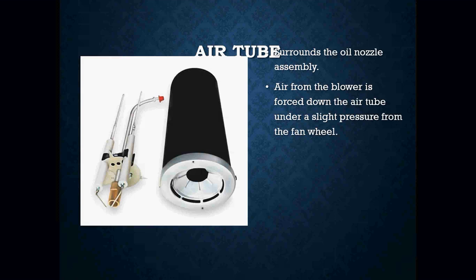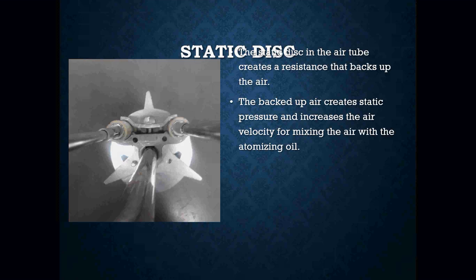Your air tube surrounds the oil nozzle assembly. The air from the blower is forced down the air tube under a slight pressure from your fan wheel. Your static disc is in the air tube and creates a resistance that backs up the air. The backed-up air creates static pressure and increases the air velocity for mixing the air with the atomized oil.